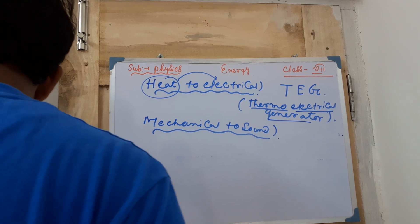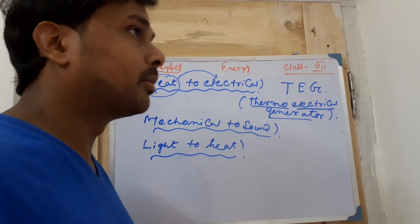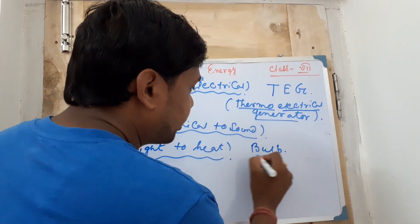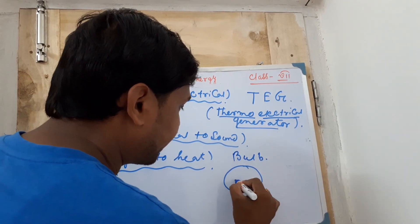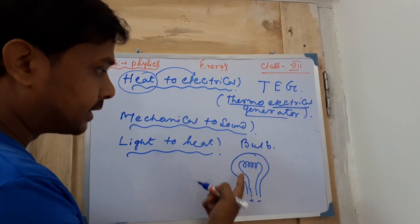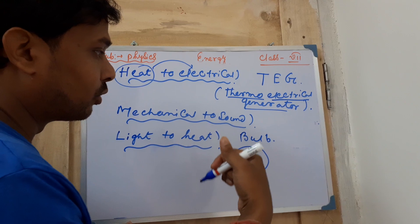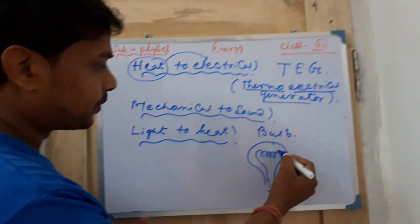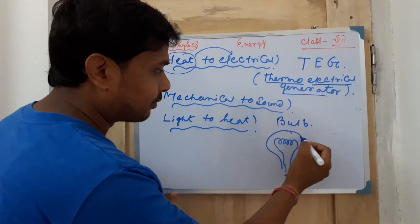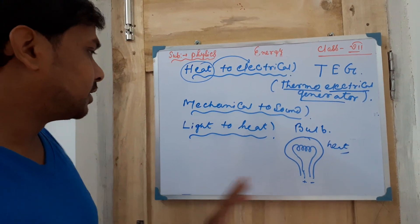For light to heat energy, the example is an incandescent bulb. When electricity comes to the filament of the bulb, the filament glows and a large amount of heat energy is generated. You can tell this is also an example of electrical energy to light energy — but if you touch the outside of the bulb, you can feel the heat. So heat energy is generated as a byproduct of the light produced, making this a light-to-heat energy conversion as well.